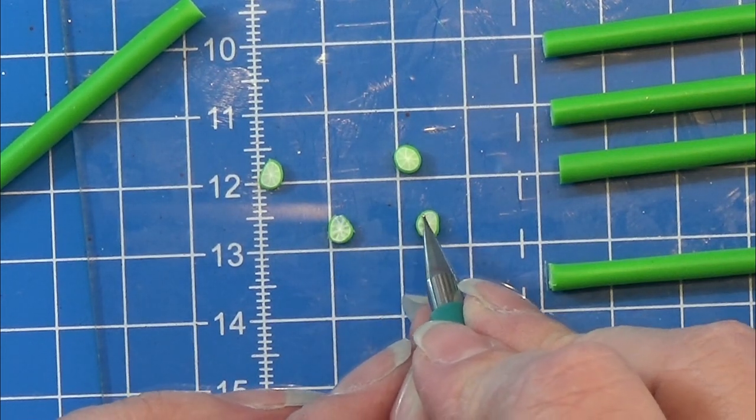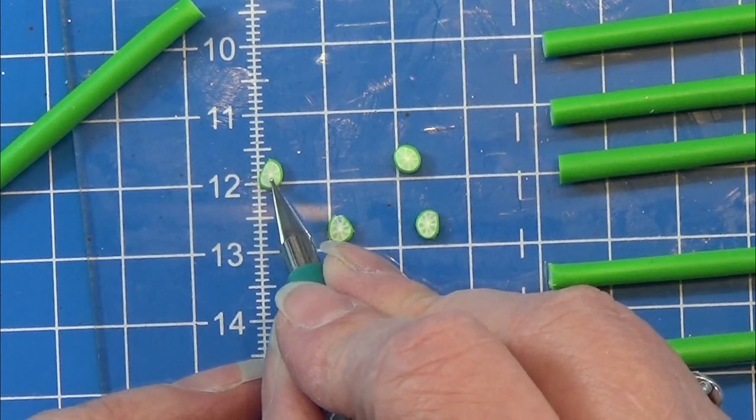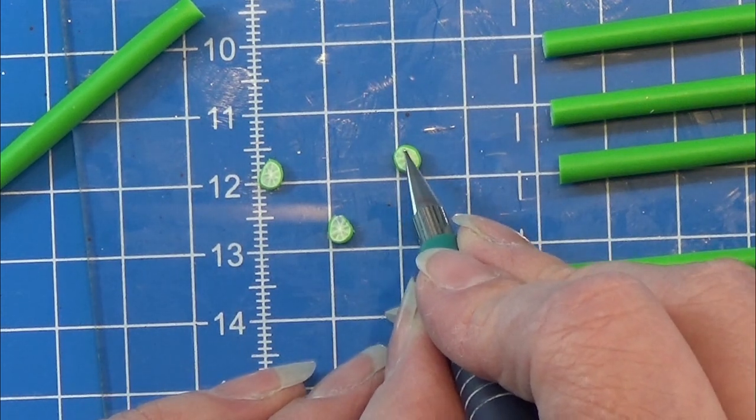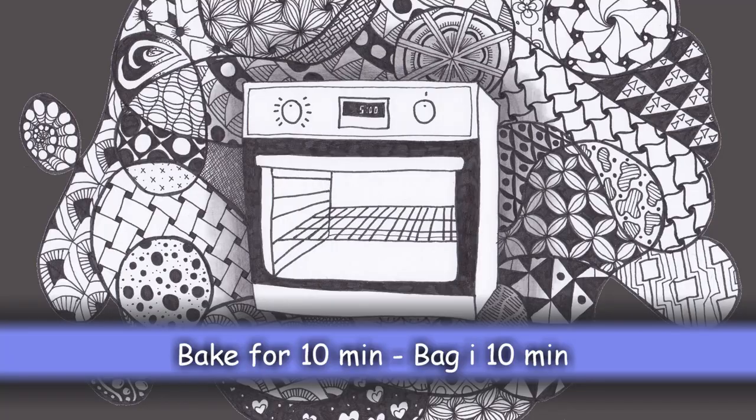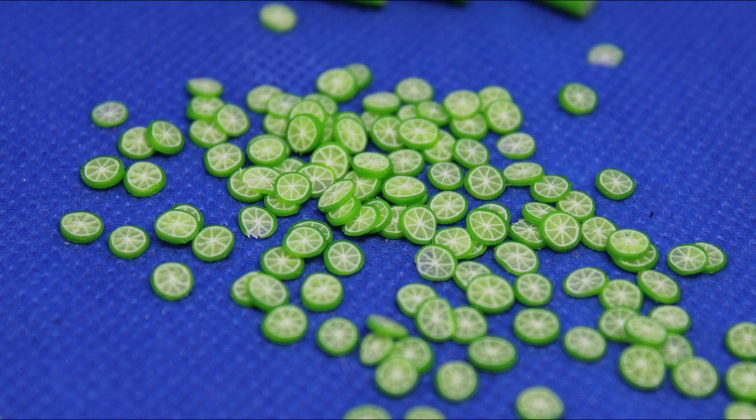Here I am just making a few slices of the cane and showing you how I am using a tiny ball tool to make some indents here, only in the translucent parts to make some textures in these. Bake them and then you are all done. Thank you for watching and happy crafting.